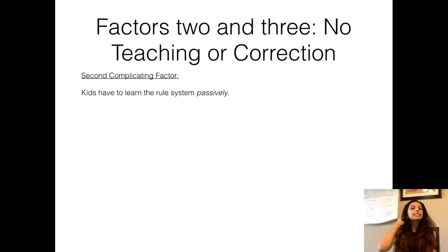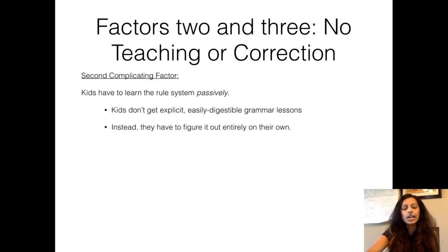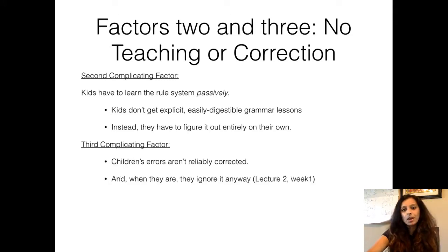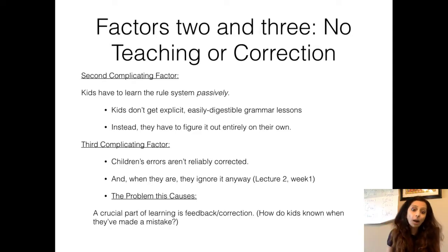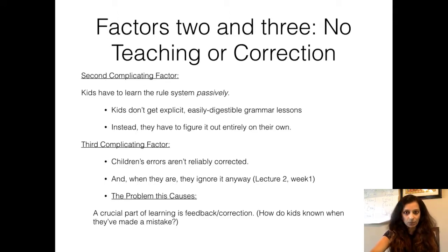The second complicating factor is that we are not actively teaching or correcting the child — and correcting the child has actually been shown to not do anything. We saw this in the first module. So kids are actually learning the system quite passively. The third complicating factor is that even if you correct them, children ignore it right away. They don't care about it. The problem this causes is that there is a crucial part of learning — feedback and correction — but kids are not using that to reliably learn a first language.